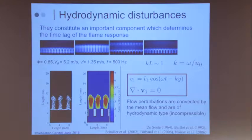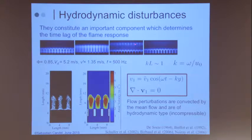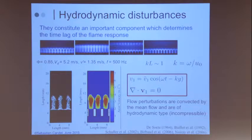Another situation with the same dynamics is multiple flames — you have a perforated plate with a number of little flames displaced by the perturbation in velocity. A vortex spot is produced which is a source of acoustic waves, and then the flames come back. We've seen this film already.